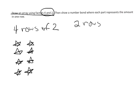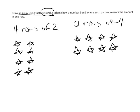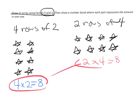Either way, we're going to see that there are eight stars. Students will see that four times two equals eight, and also that two times four equals eight. Students should by now be starting to see the commutative property in action.